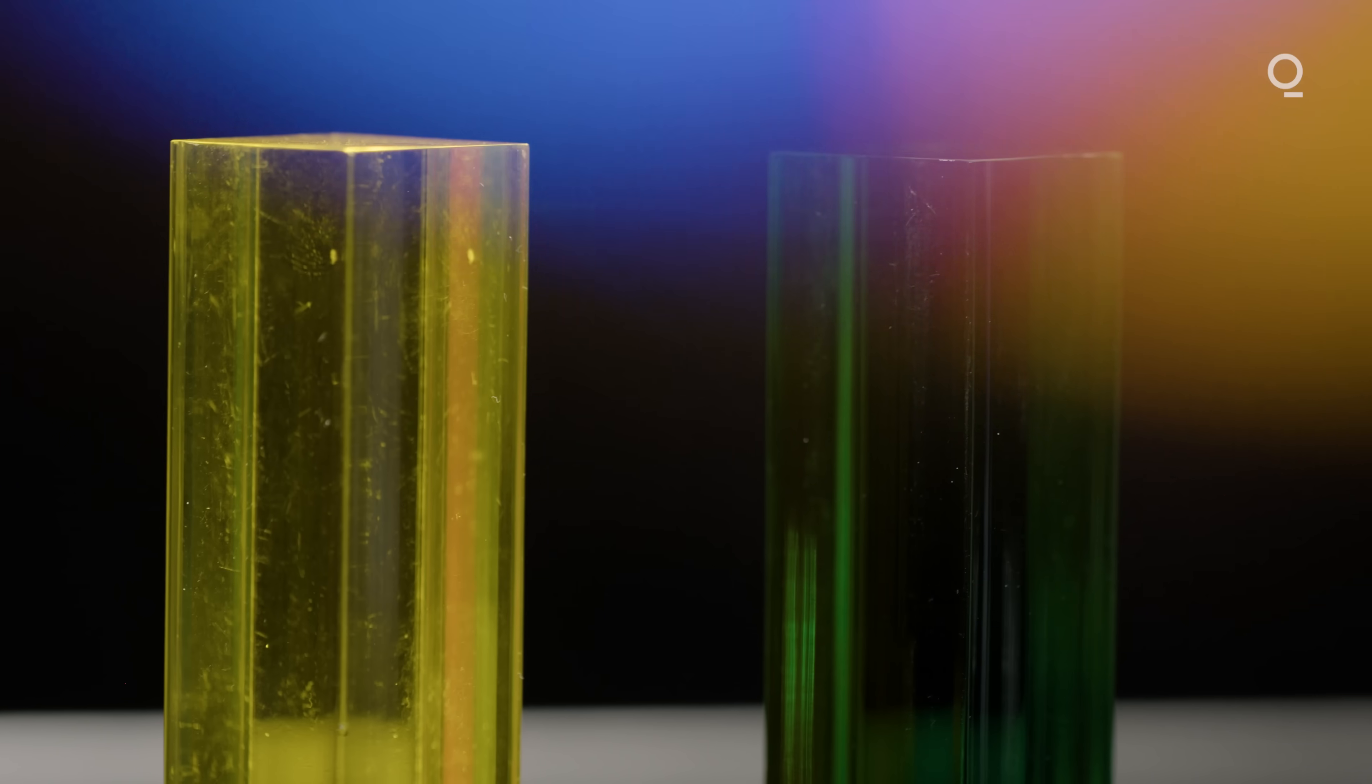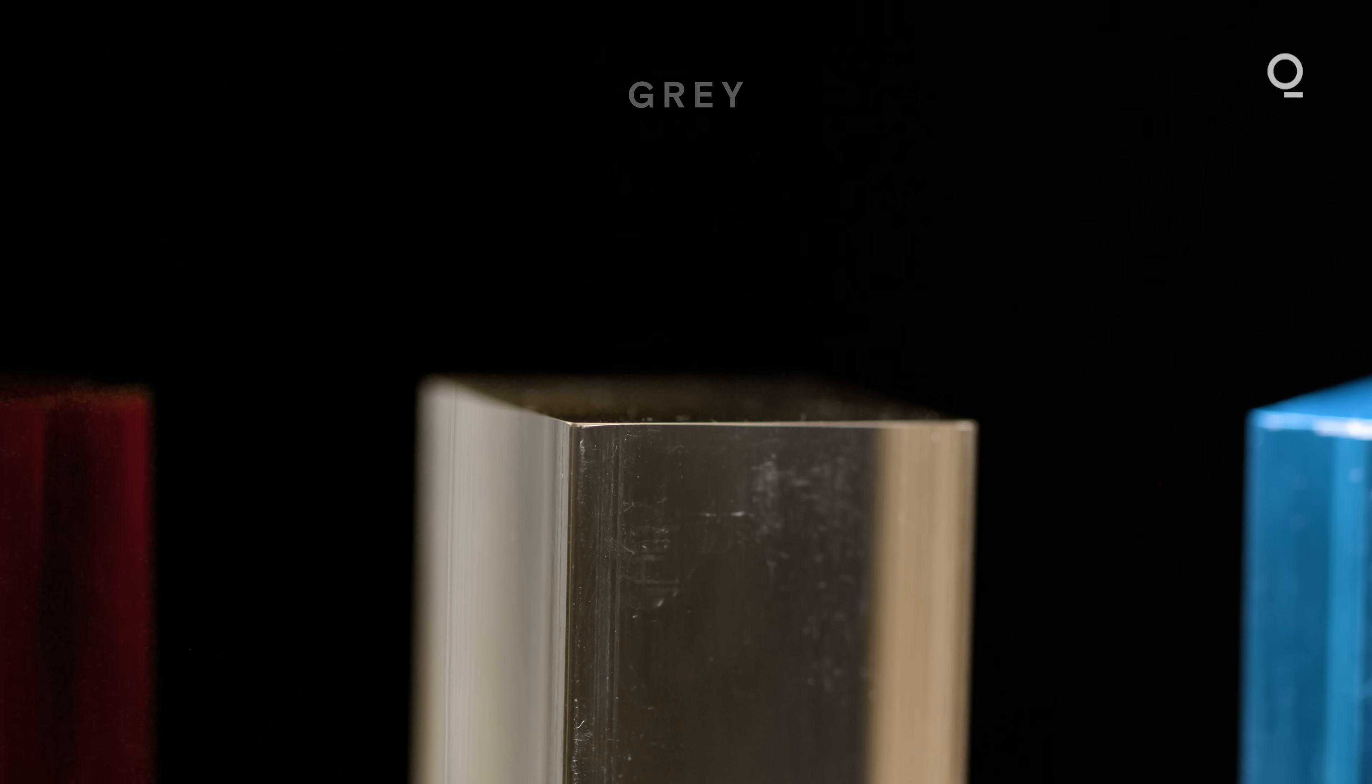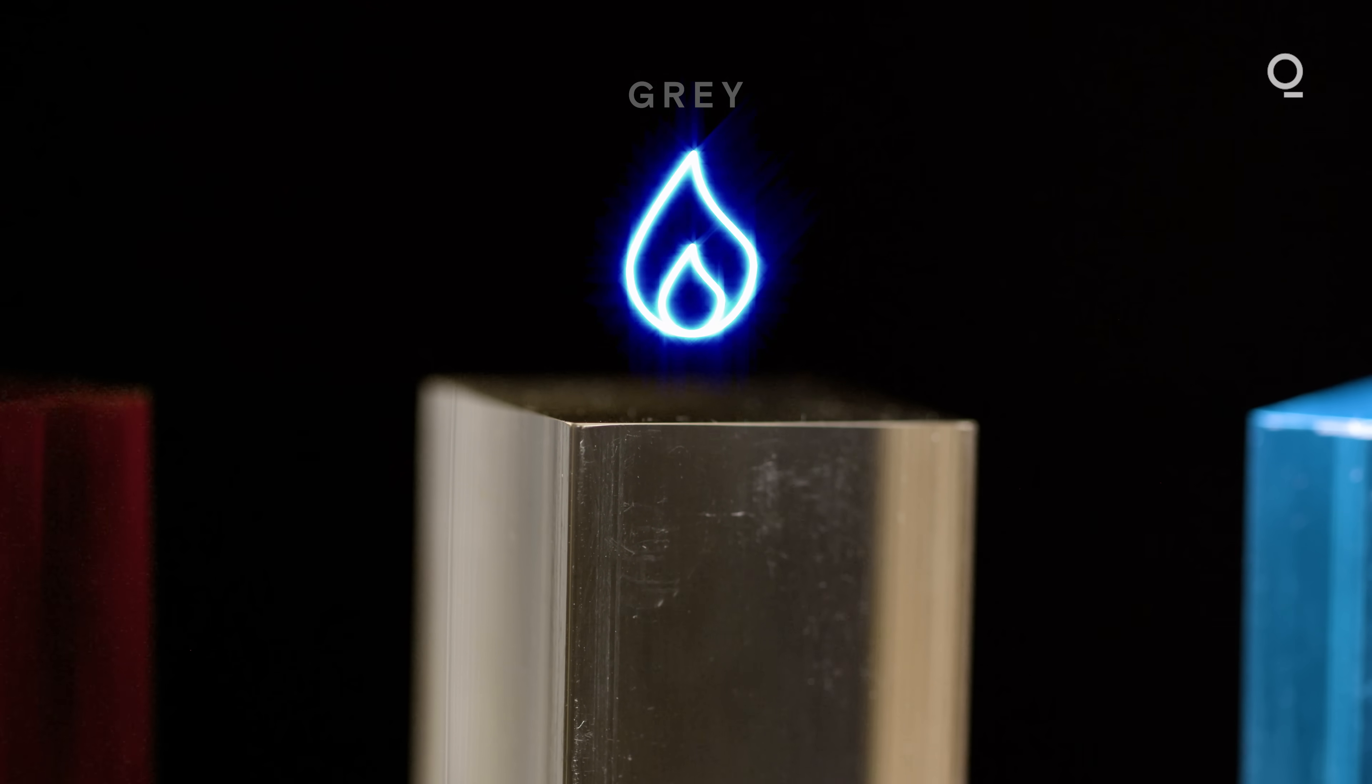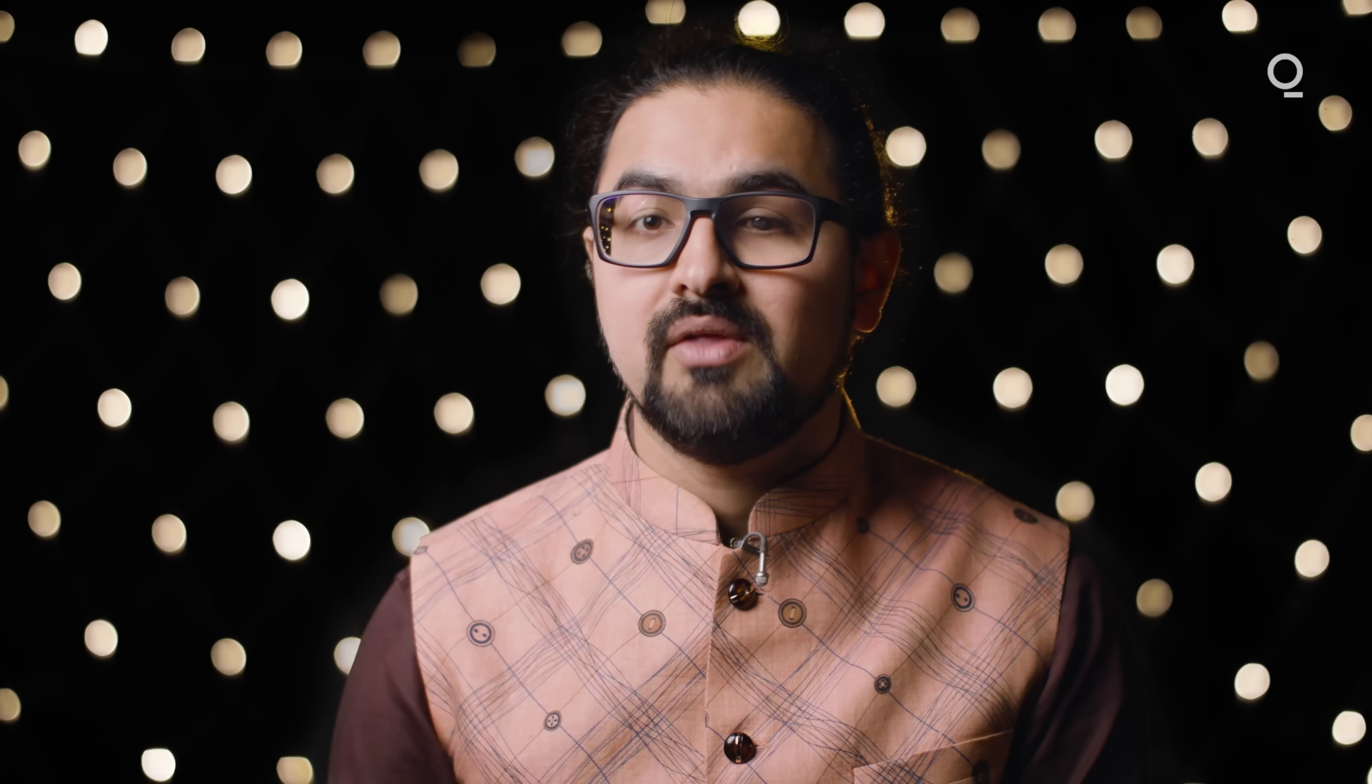The rainbow scales from the most environmentally friendly to the least. Grey hydrogen means taking natural gas and converting that into hydrogen while creating CO2 emissions. Blue hydrogen is grey hydrogen but with carbon capture, so there are no CO2 emissions put into the atmosphere. Instead, they are captured and buried deep underground.